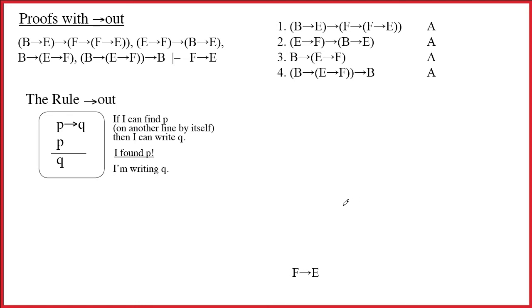This is our second video about constructing proofs. Once again, we're only using the rule arrow out at this point, and so life will be relatively simple. The argument for which we're going to construct a proof is a little bit longer. In fact, at this point, since we've only got one rule, the only way to make things interesting is to make them longer.